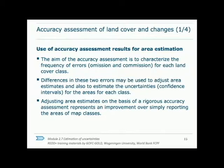Each class may have errors of both omission and commission. In most situations, the errors of omission and commission for a class are not equal. Differences in these two errors may be used to adjust area estimates and also to estimate the uncertainties or confidence intervals for the areas of each class. Adjusting area estimates on the basis of a rigorous accuracy assessment represents an improvement over simply reporting the area of map classes.